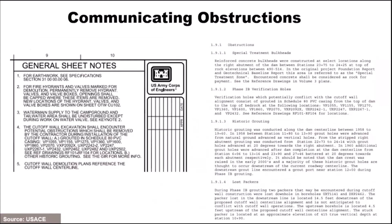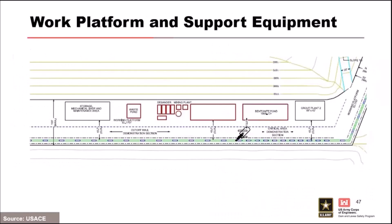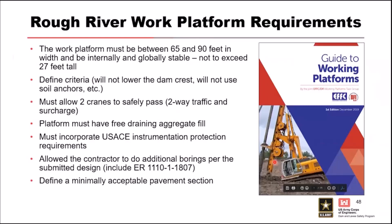This is a general cartoon showing a layout of the work platform with several pieces of equipment. You're going to need production plants, slurry ponds, and support equipment, and you need to still be able to pass equipment and maintain a safe working environment. DFI has come out with some updated guidance on working platforms. For Rough River, for the actual cutoff wall, the seepage barrier work platform, we went with a performance specification. The requirement defined the work: work platform must be between 65 and 90 feet, internally and globally stable, not to exceed 27 feet high.